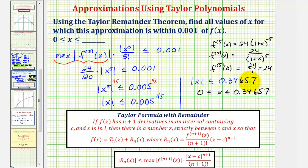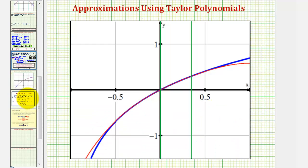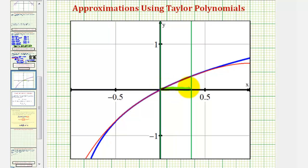Let's take a look at this graphically. The actual function is graphed in blue and the Maclaurin polynomial is graphed in red. On the interval from zero to approximately 0.34657, the Taylor polynomial approximation is within 0.001 of the true function value. I hope you found this helpful.